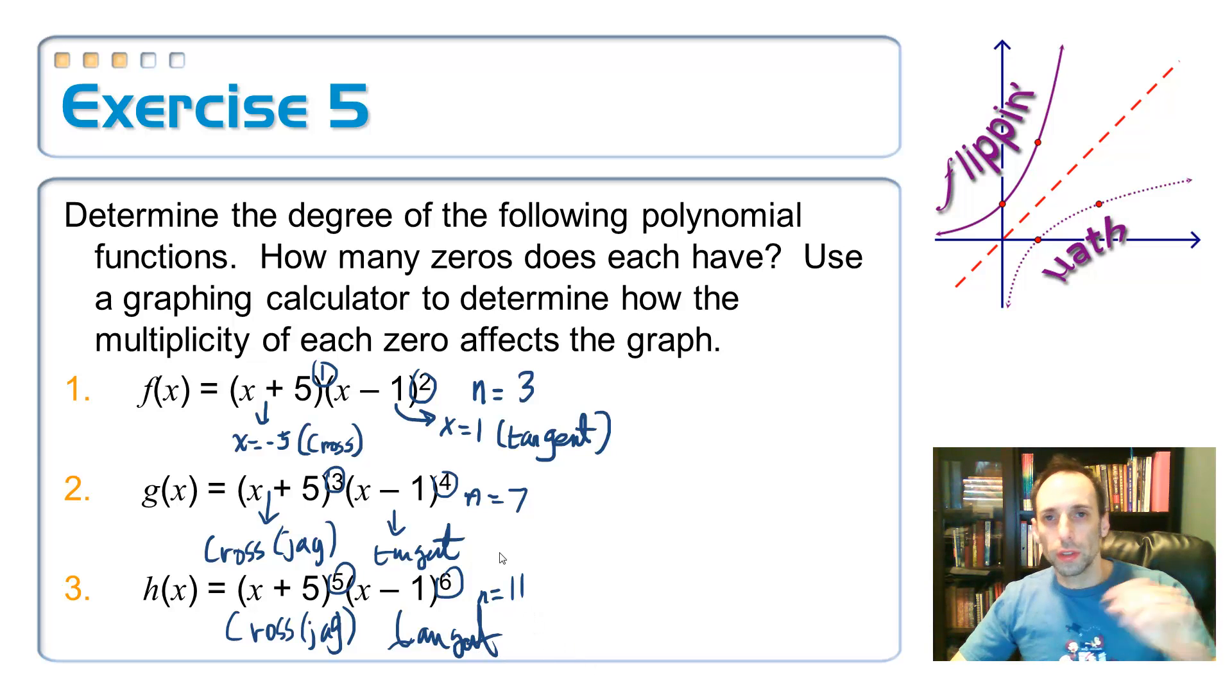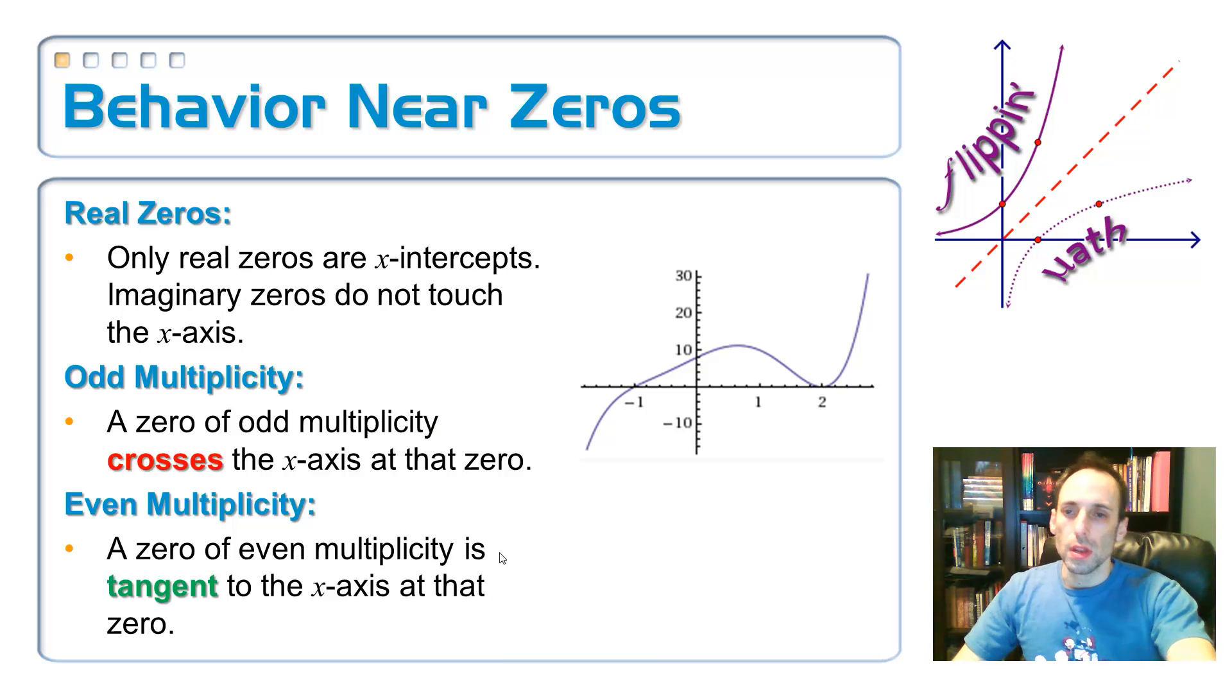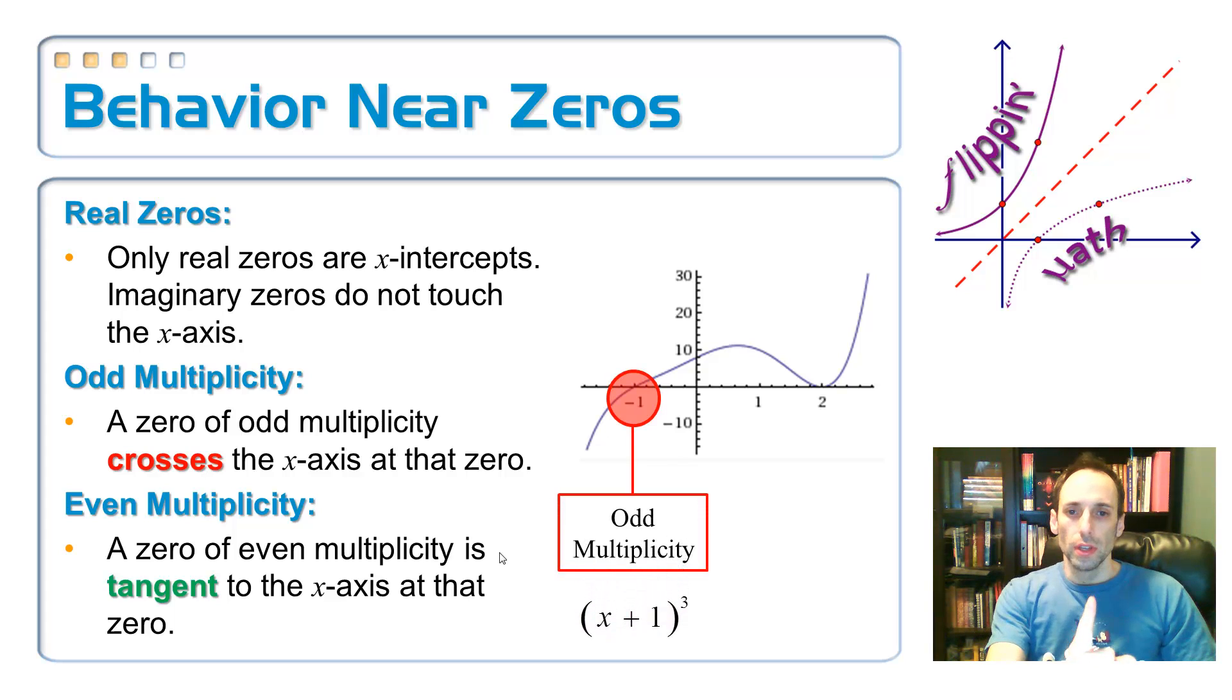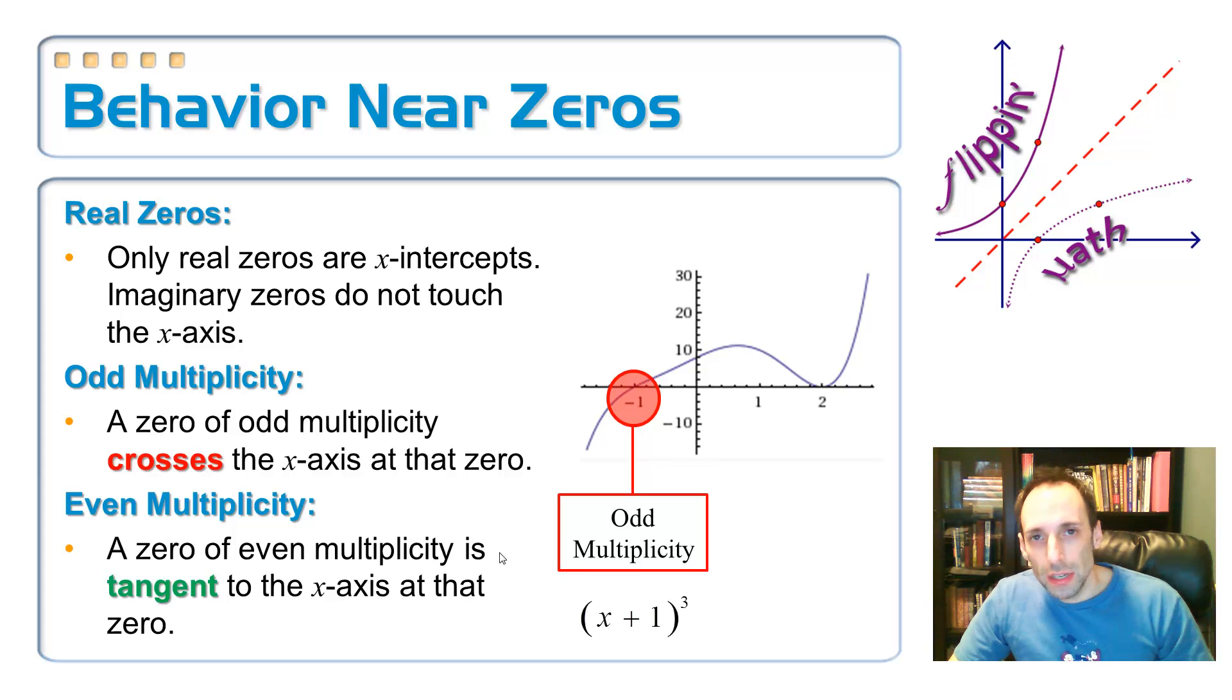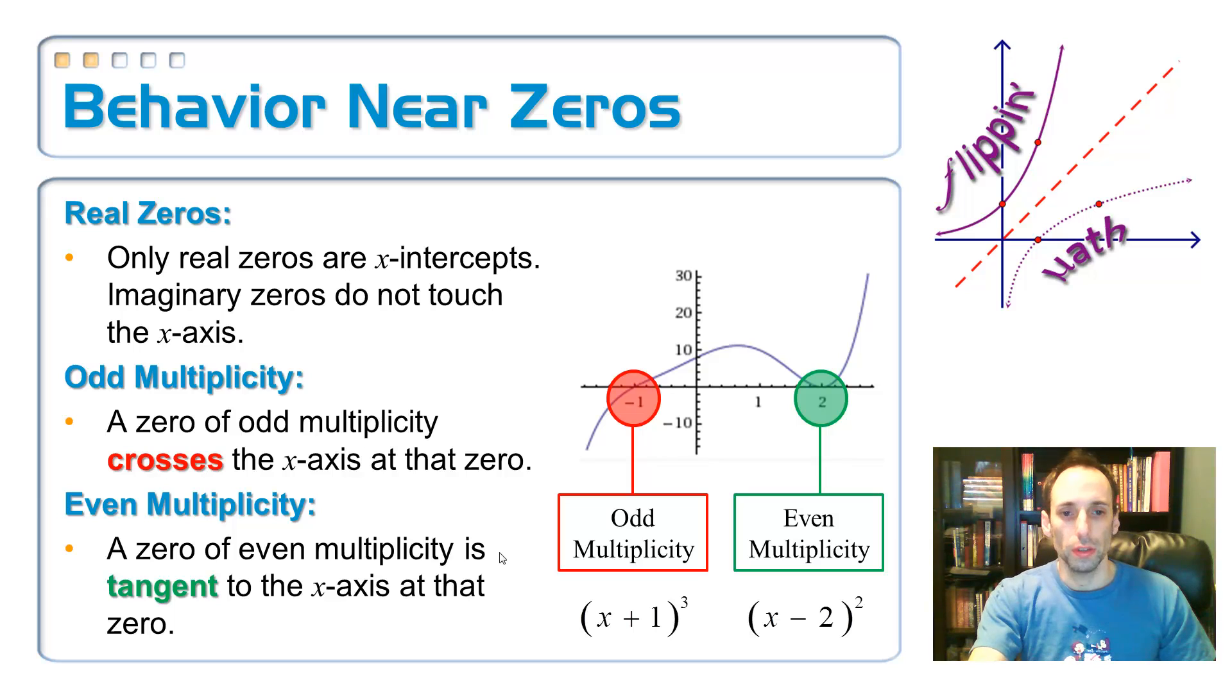So here it is all summarized for us. First of all, zeros are only x-intercepts if they are real numbers. Imaginary ones are not going to touch the x-axis. That's the first thing. Second thing, if it has an odd multiplicity, so in other words, the factor, whatever it is, is raised to the first power, the third power, the fifth power, whatever, it's going to cross the x-axis at that point. The higher the power, the more it's going to kind of flatten out a little bit whenever it crosses. So that first one at x equals negative one, it's an odd multiplicity. So for example, this might be x plus three, x plus one to the third power. The last one, even multiplicity means that it's going to be tangent to the x-axis. It's going to just bounce right off. So that's the one, the zero that is at x equals two. So for example, that could be x minus two to the second power, even multiplicity.